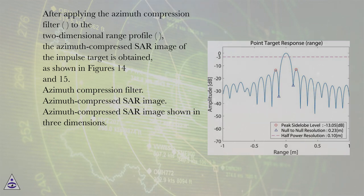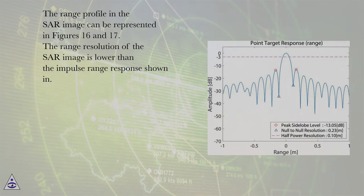Azimuth compression filter. Azimuth compressed SAR image. Azimuth compressed SAR image shown in three dimensions. The range profile in the SAR image can be represented in figures 16 and 17.